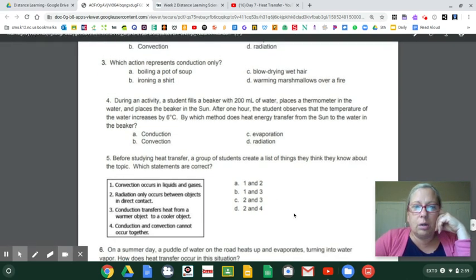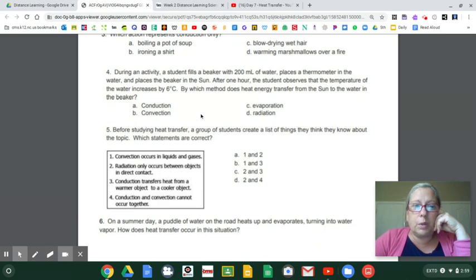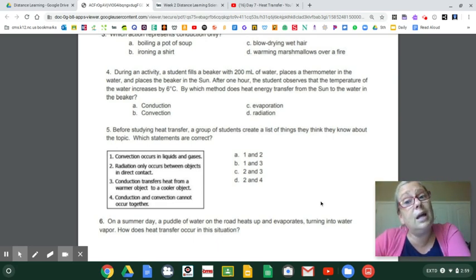Number four, during an activity, a student fills a beaker with 200 milliliters of water, places a thermometer in the water, and places the beaker in the sun. After one hour, the student observes that the temperature of the water increases by six degrees Celsius. Radiation is the sun. By which method does heat energy transfer from the sun to the water? I think I kind of gave that away, but I don't think there's any problem with that because you already would have seen the sun, right? And saw that it was in the sun and then you would have known because it said sun twice. Sun and fire, radiation.